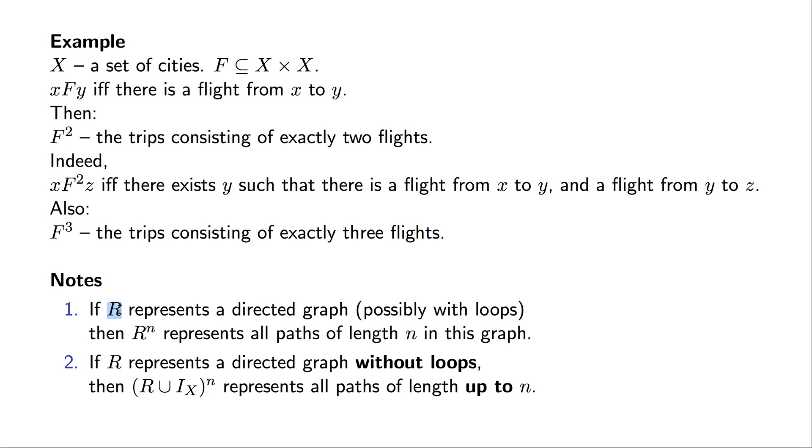What do I mean by R representing a directed graph with loops? We talked about visualizing a binary relation as a directed graph with loops. So this is what is meant here.